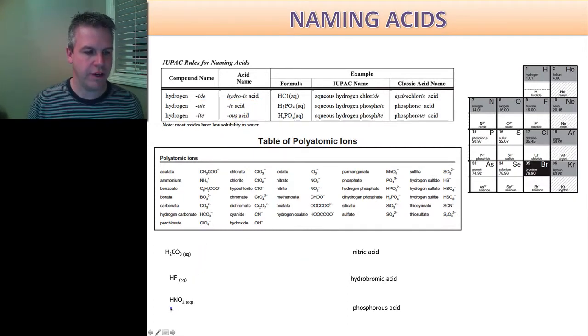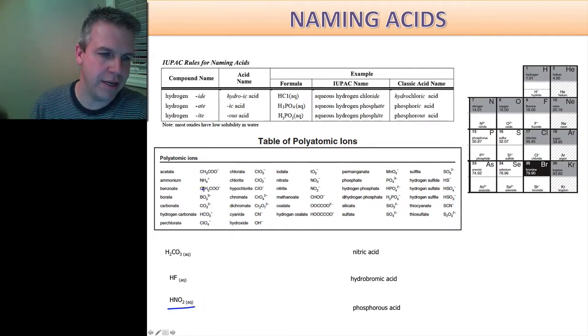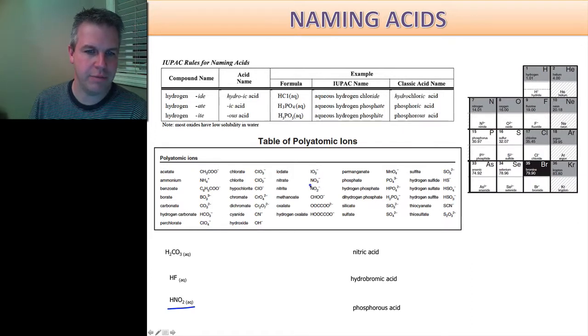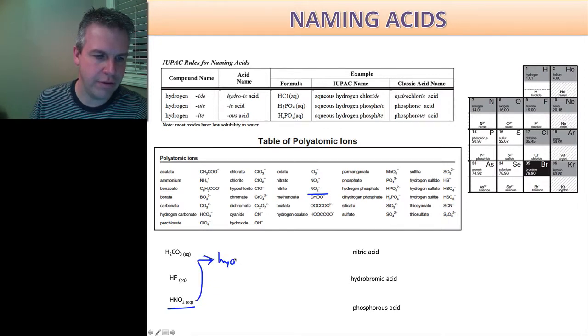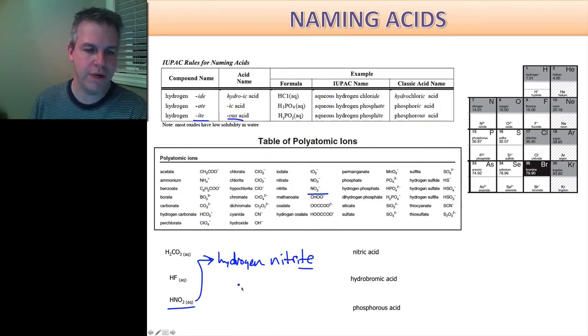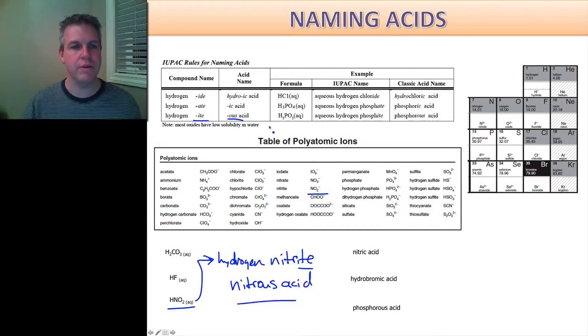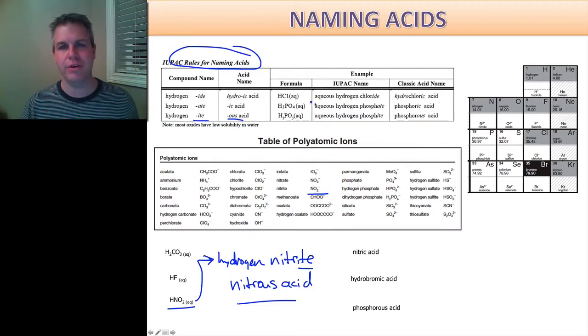Moving on to our next one. HNO2. So I'm going to look on my periodic table here, polyatomic ions. NO2 is nitrite. So this is hydrogen nitrite. Okay, ite tells me that I have to make it an ous acid. So this is going to be nitrous acid. Really simple. Just following along with the rules. And again, they're given on your data table or your data booklet. Very simple.